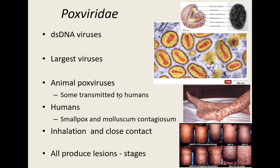There are a lot of Poxviridae viruses that affect animals, and a few are transmitted to humans when we come into close contact with infected animals. Normally those are not very deadly — more of an annoyance than anything else. But there are two viruses in the Poxviridae family that do cause human disease: smallpox and molluscum contagiosum. They are both picked up by inhalation and close contact, and these viruses do not survive outside of the host in the environment for very long.